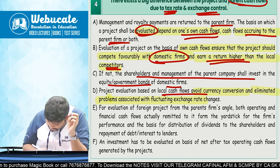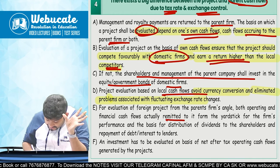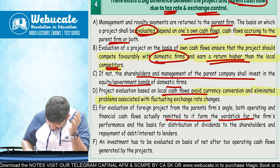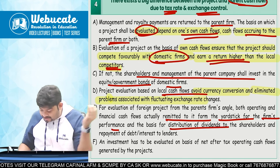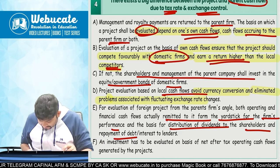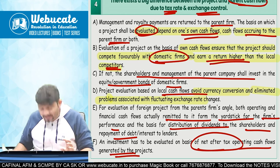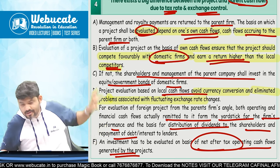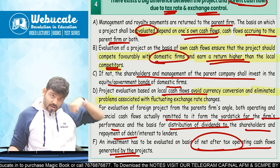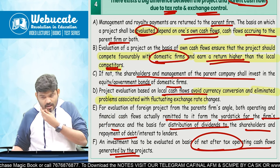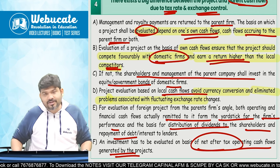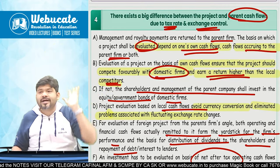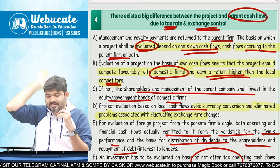For evaluation of a foreign project from the parent firm's angle, both operating and financial cash flows actually remitted to it form the yardstick. So if I am a subsidiary in India of a US parent company, how much I have remitted will form the yardstick for the firm's performance and basis for distribution of dividend to shareholders and repayment of debt. An investment has to be evaluated on the basis of net after-tax operating cash flows generated by the project.